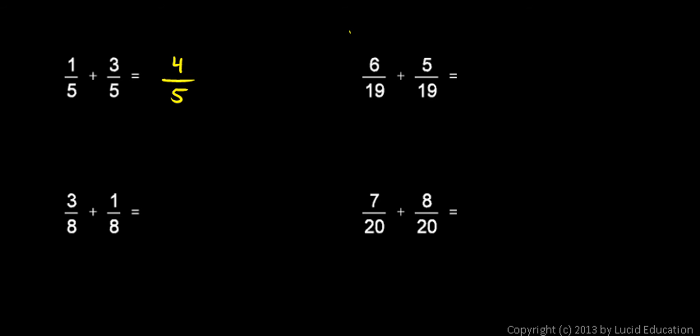Apply that same concept over here. 6 19ths plus 5 19ths would give me 11 19ths. I can add these two numerators directly because they both represent the same type of thing. They both represent 19ths. They are like fractions.